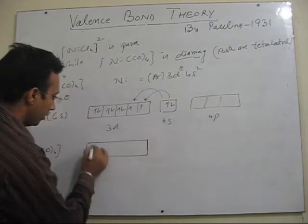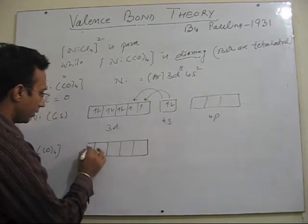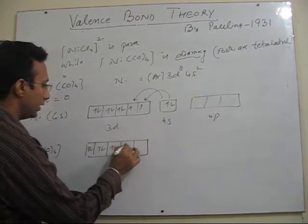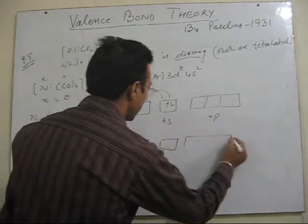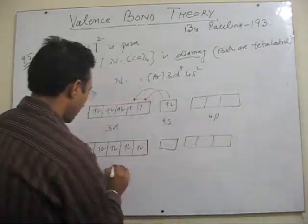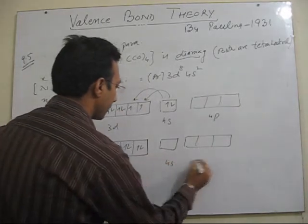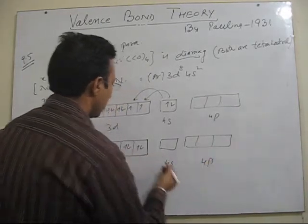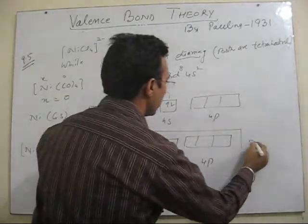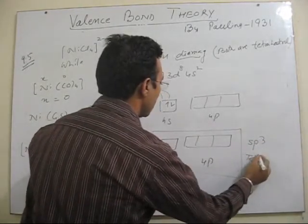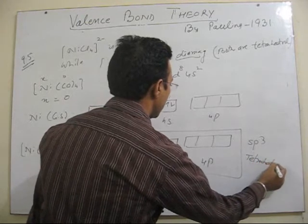So anyhow let's explain. So here all the d will be fulfilled. S is completely empty, 4p is empty. So you can easily explain here sp3 hybridization and the shape of the complex is tetrahedral.